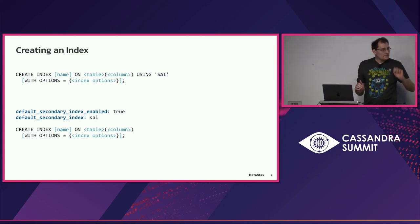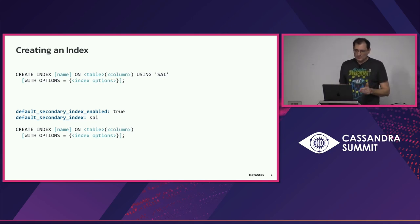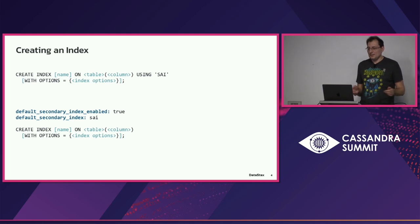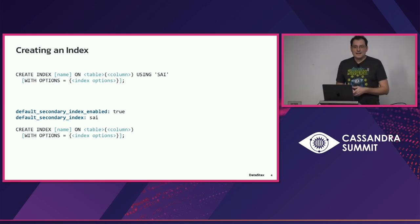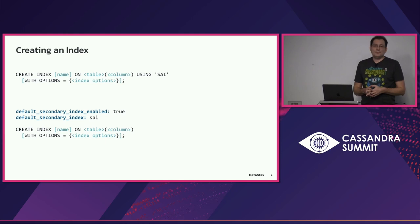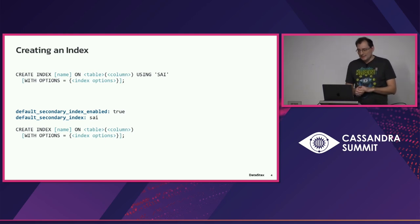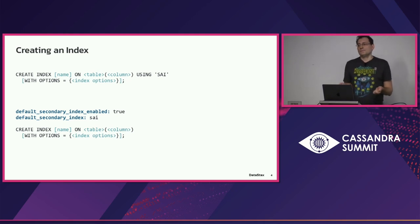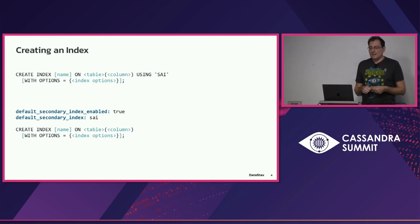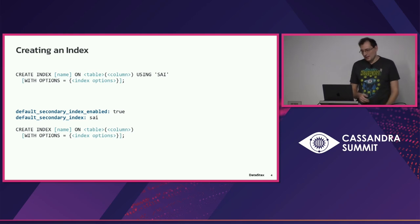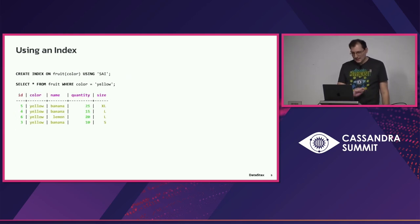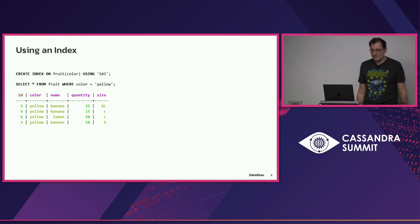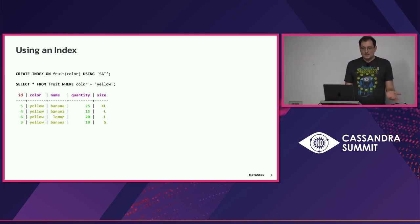The basic syntax is very simple: CREATE INDEX, and you just need to specify USING SAI to tell the database that you want to use this kind of index. There is also an option in the Cassandra YAML to set 'default_secondary_index_enabled: true', in which case your statement could simply be CREATE INDEX and it would automatically choose SAI.